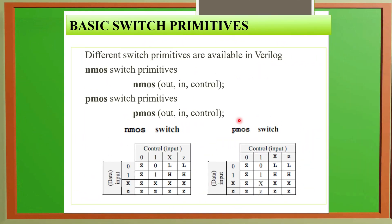Basic switch primitives which we are going to use for CMOS: we know it is a combination of NMOS and PMOS. The syntax is NMOS in brackets: out, in, control. First we must have output, input, and control signal. Similarly, PMOS syntax is PMOS out, in, and control.